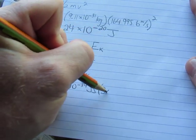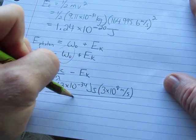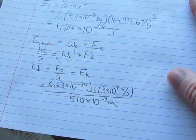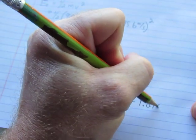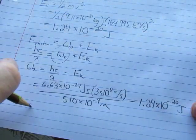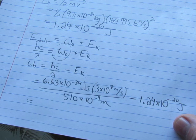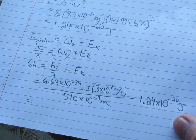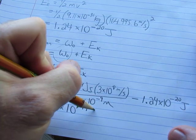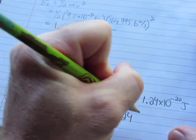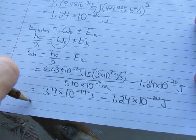We'll rearrange this right away. Work function equals hc over wavelength minus the kinetic energy. h is Planck's constant, 6.63 times 10 to the negative 34 joule seconds. c is the speed of light, 3 times 10 to the 8 meters per second, divided by 510 times 10 to the negative 9 meters. I'm going to subtract off the kinetic energy 1.24 times 10 to the negative 20 joules. That comes out to 3.9 times 10 to the negative 19.